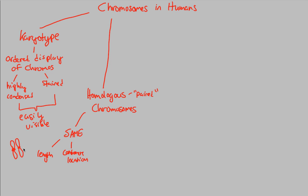Moving forward, homologous chromosomes also display the same staining patterns. Those staining patterns would show up during something like a karyotype. If you do a karyotype, these two chromosomes will always pair with each other because they are homologous — they are a homologous pair.